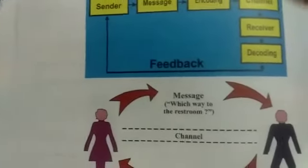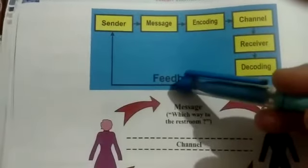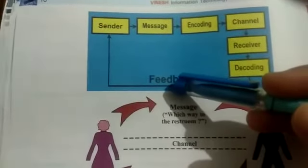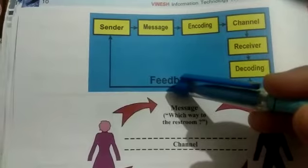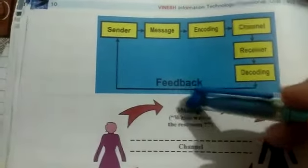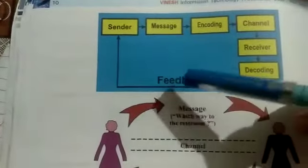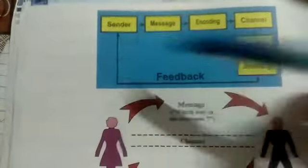Next is feedback - very important. Feedback is the process of ensuring that the receiver has received the message and understood in the same sense as the sender wants to send, as the sender meant it. Then the receiver will send feedback to the sender.